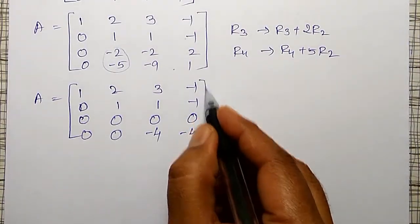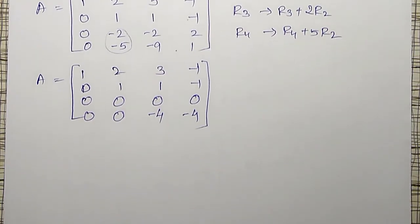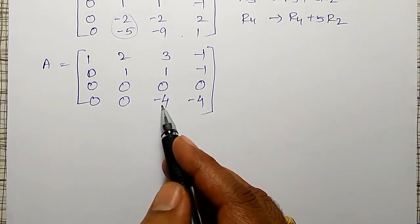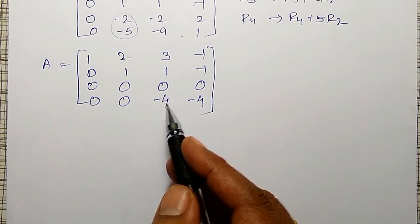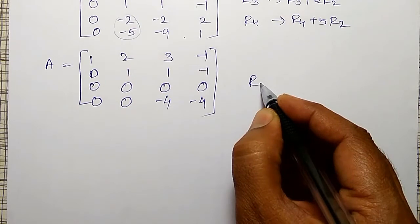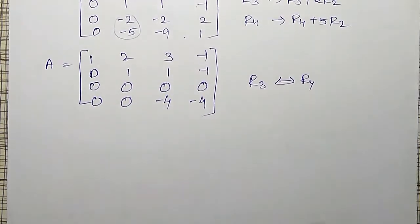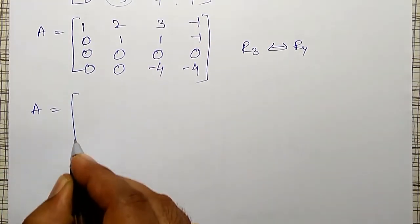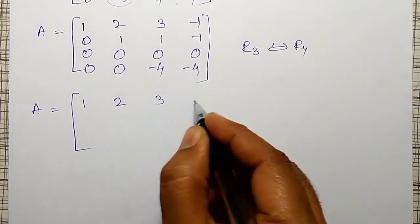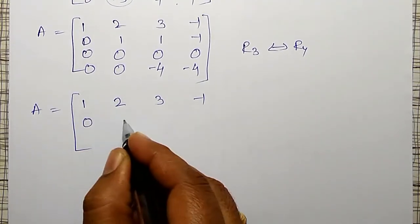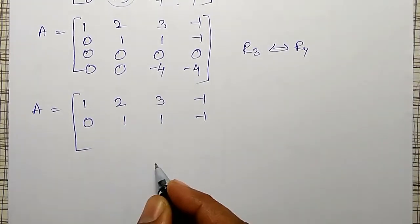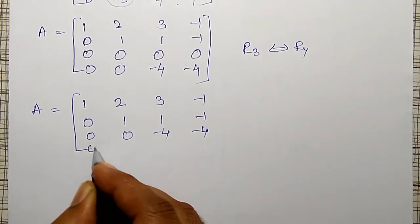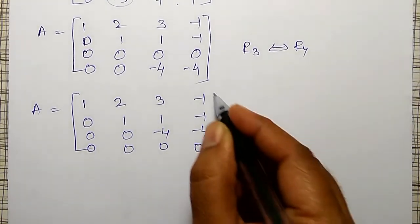Observe that R3 is all zeros and R4 has a non-zero element remaining. Therefore I will interchange R3 and R4. The matrix A becomes: 1, 2, 3, −1; 0, 1, 1, −1; 0, 0, −4, −4; 0, 0, 0, 0.